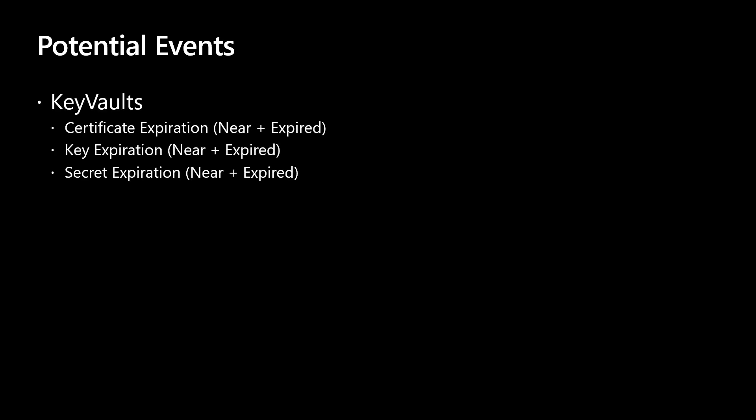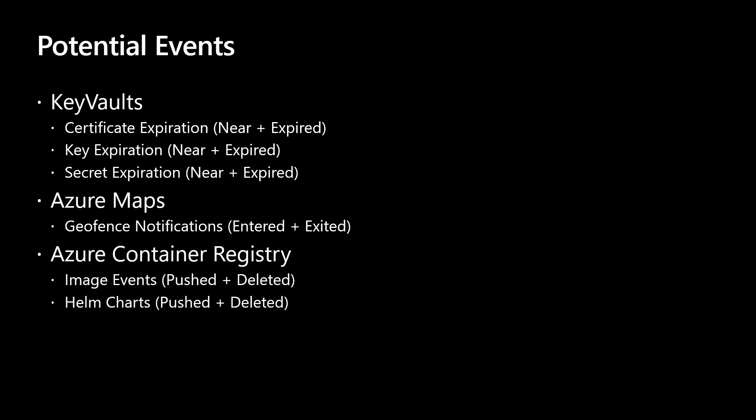Here are a few potential events that we have built into Azure — and don't forget that you can make your own. Key Vault is one where its usefulness in an organization is very high; it is essential. Gone are the days where you won't know until everything breaks that certificates, keys, and secrets are expiring or have expired. Azure Maps allows you to handle users going in and out of predetermined regions — something called geofencing. What do you do when fluffy the cat escapes yet again? And maybe you're maintaining a lot of containers and need to run some logic when image or Helm chart operations happen — this has you covered as well.